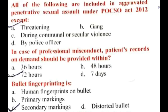First question: all of the following are included in aggravated penetrative sexual assault under the POCSO Act, except gang rape. Sexual assault during communal or sectarian violence, and by a police officer, also comes under the POCSO Act. POCSO stands for Protection of Children from Sexual Offenses Act 2012. Offenses against children include penetrative sexual assault, aggravated penetrative sexual assault, sexual and aggravated sexual assault, sexual harassment, and using a child for pornographic purposes — all come under the POCSO Act.